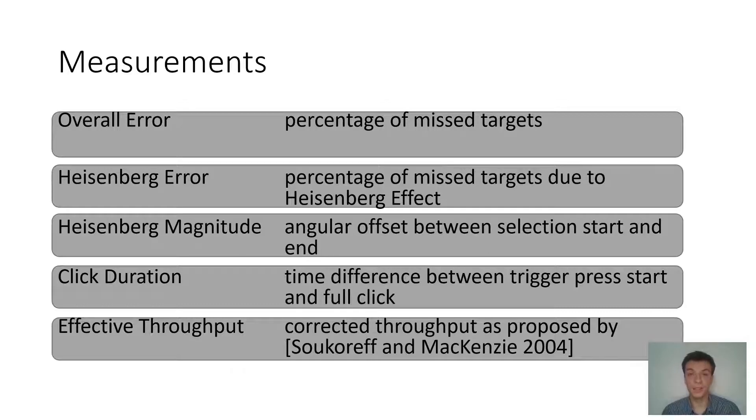We had different measurements that we took. Some of them are the overall error, so the total amount of errors, meaning that the percentage of targets that were missed. Then the Heisenberg error, just the percentage of missed targets where the selection started within the target but ended up outside of it. The Heisenberg magnitude, which is the angular offset between the selection start and end whenever a Heisenberg error occurs. The click duration, so the time it takes for the trigger press to finish. And we also calculated effective throughput as proposed by Soukoreff and MacKenzie to see the impact on the performance.